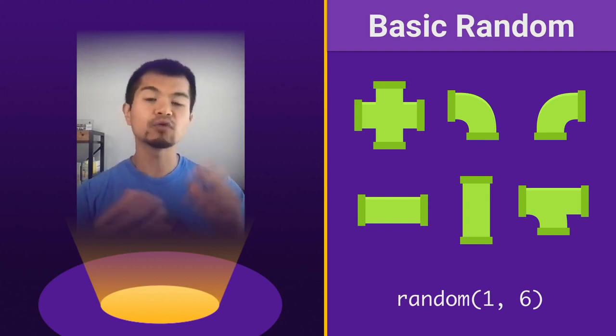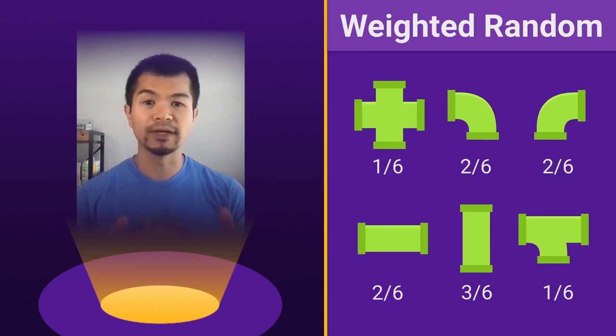But you don't really want to have the cross pipe, for example, that can connect to anything, given with the same frequency as the other pipes which may be less likely to connect to things, makes the player think a bit more and kind of strategize. So having the cross pipe come up just as frequently as everything else would make the game too easy. So one way to solve that is to use weighted random.